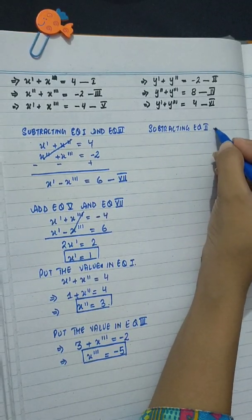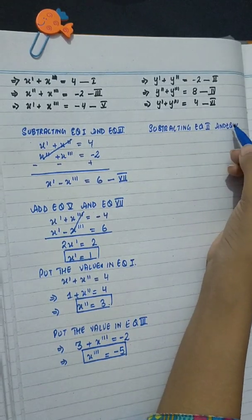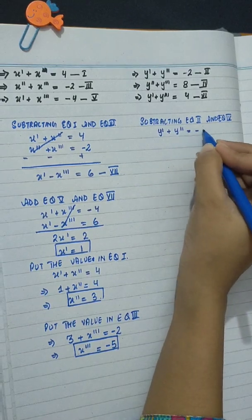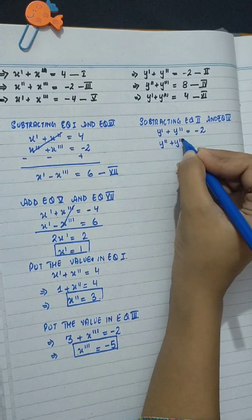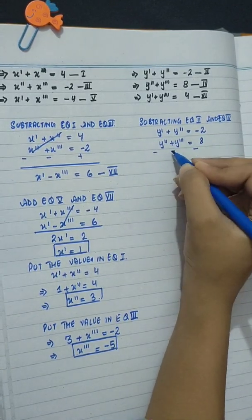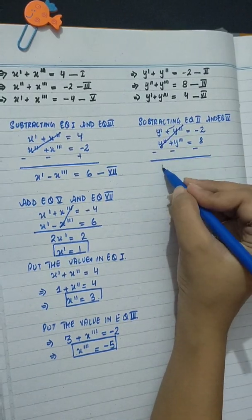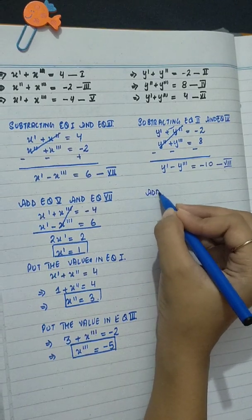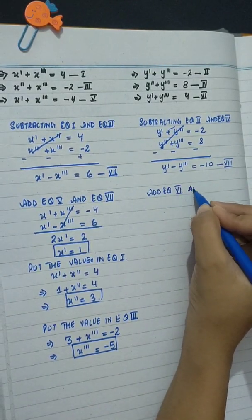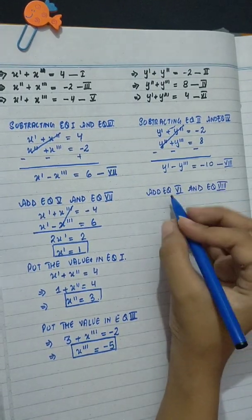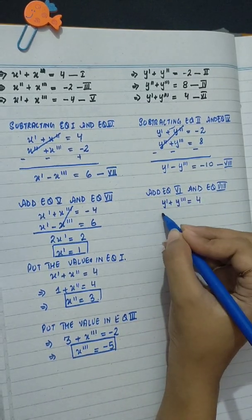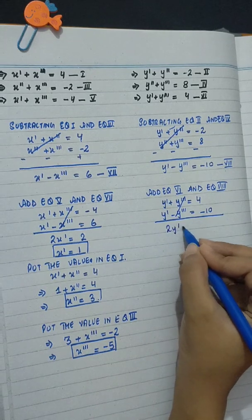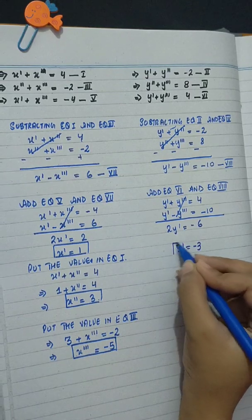Subtracting equation 2 from equation 4: (y'' + y''' = 8) minus (y' + y'' = minus 2) — after sign change, y'' cancels, giving y' minus y''' = minus 10 as equation 8. Adding equation 6 and equation 8: (y' + y''' = 4) plus (y' minus y''' = minus 10) gives 2y' = minus 6, so y' = minus 3.